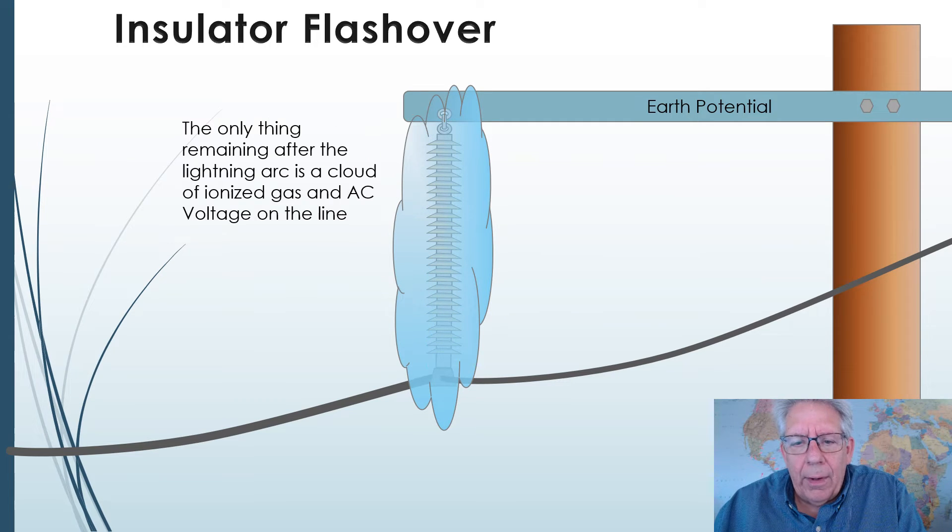But when it disappears, it leaves this significant ball of ionized gas around the insulator. This is where the problems really start getting serious.